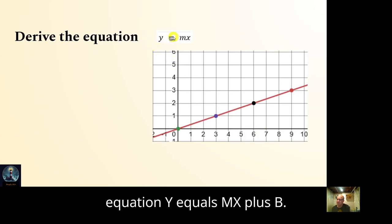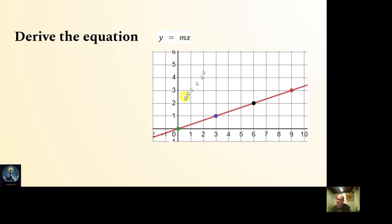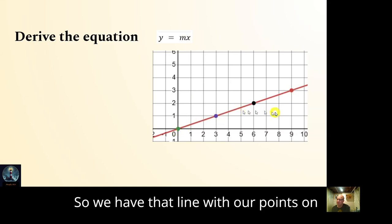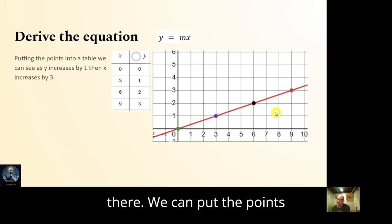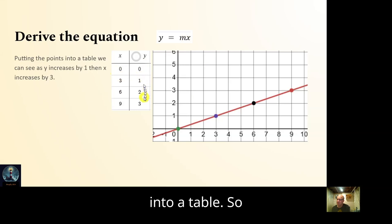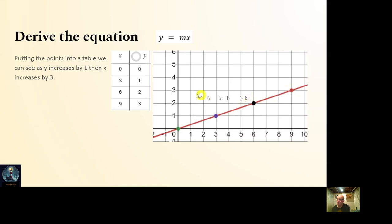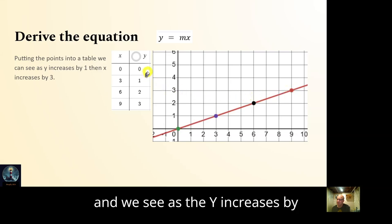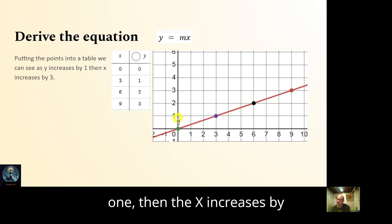We have that line with our points. We can put the points into a table: zero zero, three one, six two, nine three. We see that as y increases by one, x increases by three.